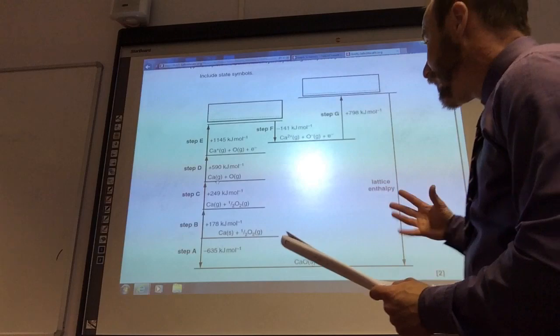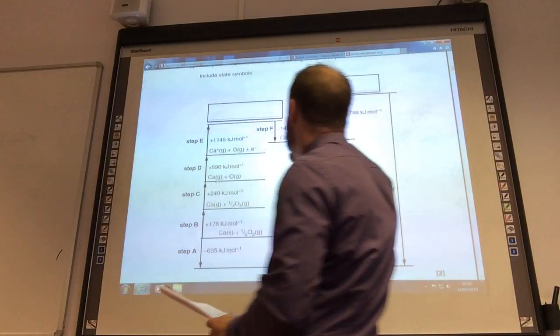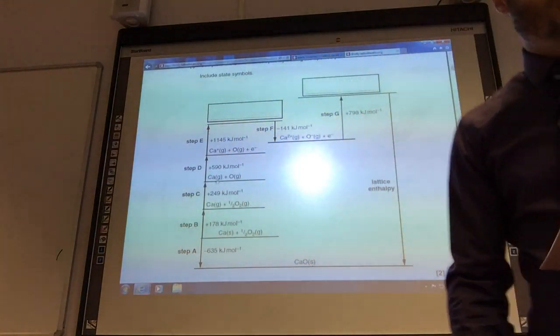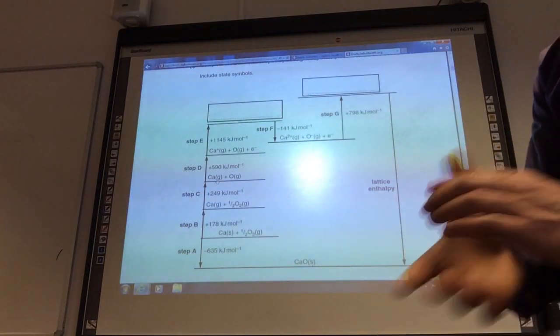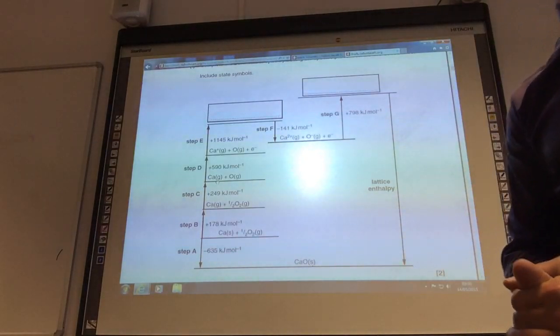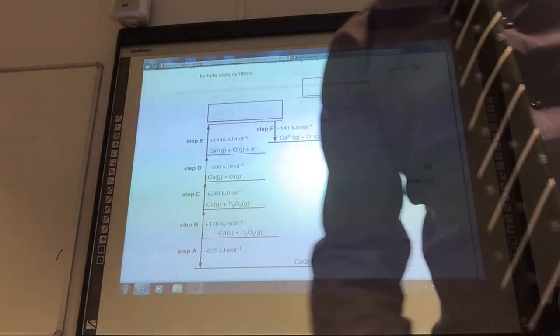The last thing, if you calculate it all out, it's a nice standard old Born-Haber cycle, you should come to minus 3,454 kilojoules per mole.